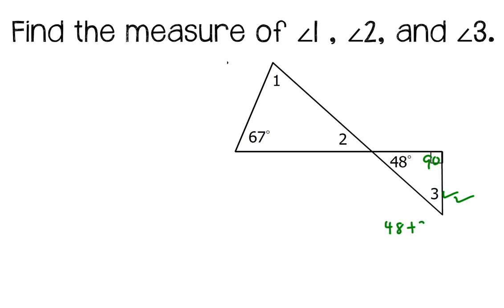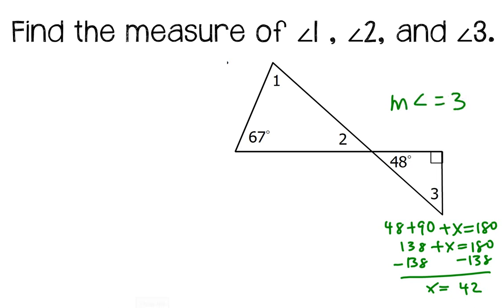Because 48 plus 90 plus my mystery angle three, which I'm going to call x, they all have to add up to 180. So 138 plus x is equal to 180. Subtract 138 from both sides, and I get x is equal to 42 degrees. So that helped me find the measure of angle three. Whoops, I'm going to write that differently. I need to say the measure of angle three, and then an equal sign. The measure of angle three is 42 degrees.